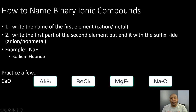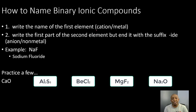Now let's figure out how to name binary ionic compounds. Take out your periodic table so you know the element names. It's pretty simple — two steps. First, write the name of the first element, which is always the cation or the metal. Second, write the first part of the second element but end it with the suffix -IDE. Your second element is always the anion or non-metal.